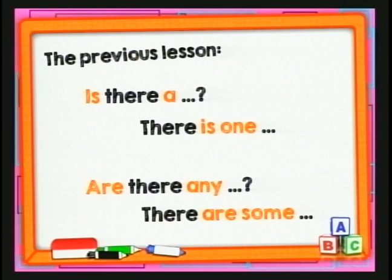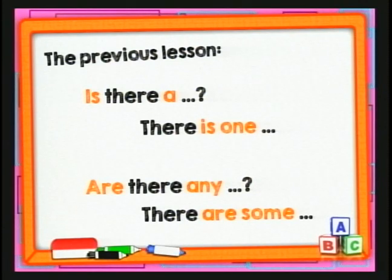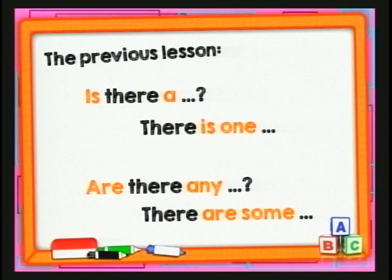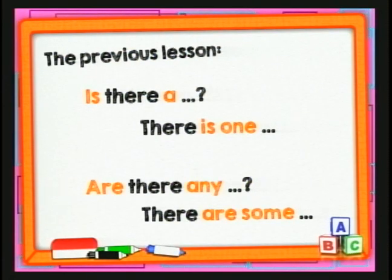Para hacer la pregunta en plural habíamos visto que tenemos que utilizar el verbo en forma plural. Ejemplo: 'Are there any?' Are there any stores around here? Are there any banks? Are there any restaurants around here? Y para responder teníamos que hacerlo de manera positiva, es decir: 'there are some.' Para recordar un poquito más de esto, ¿qué les parece si vemos algunos ejemplos?